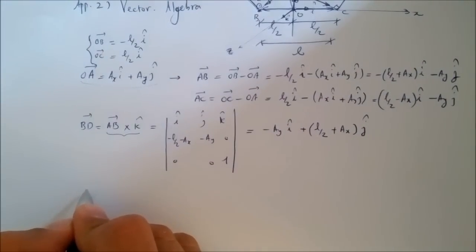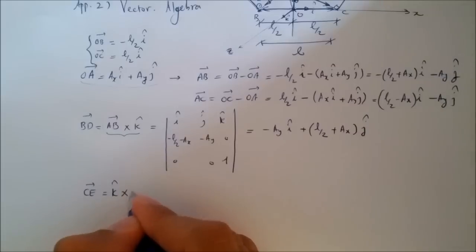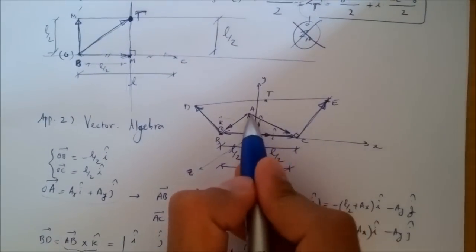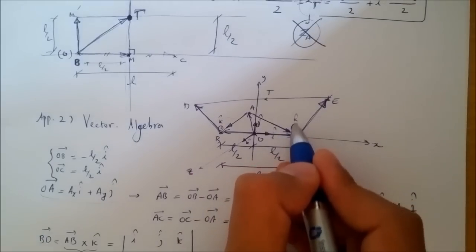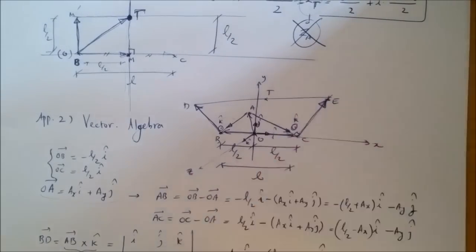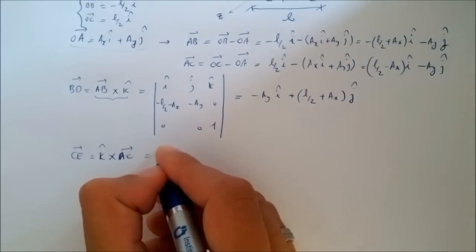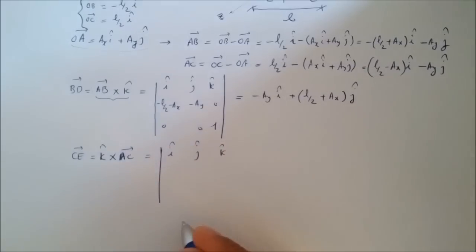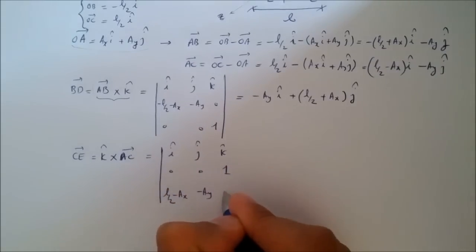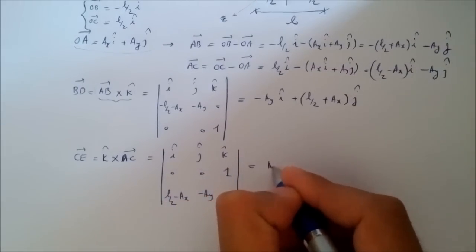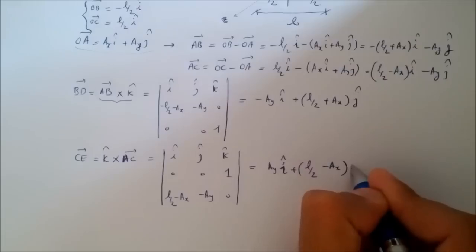Similarly, the vector CE is k̂ × AC. Computing the determinant with k̂ = (0, 0, 1) and AC = (L/2 − A_x, −A_y, 0), the result is CE = A_y î + (L/2 − A_x) ĵ.